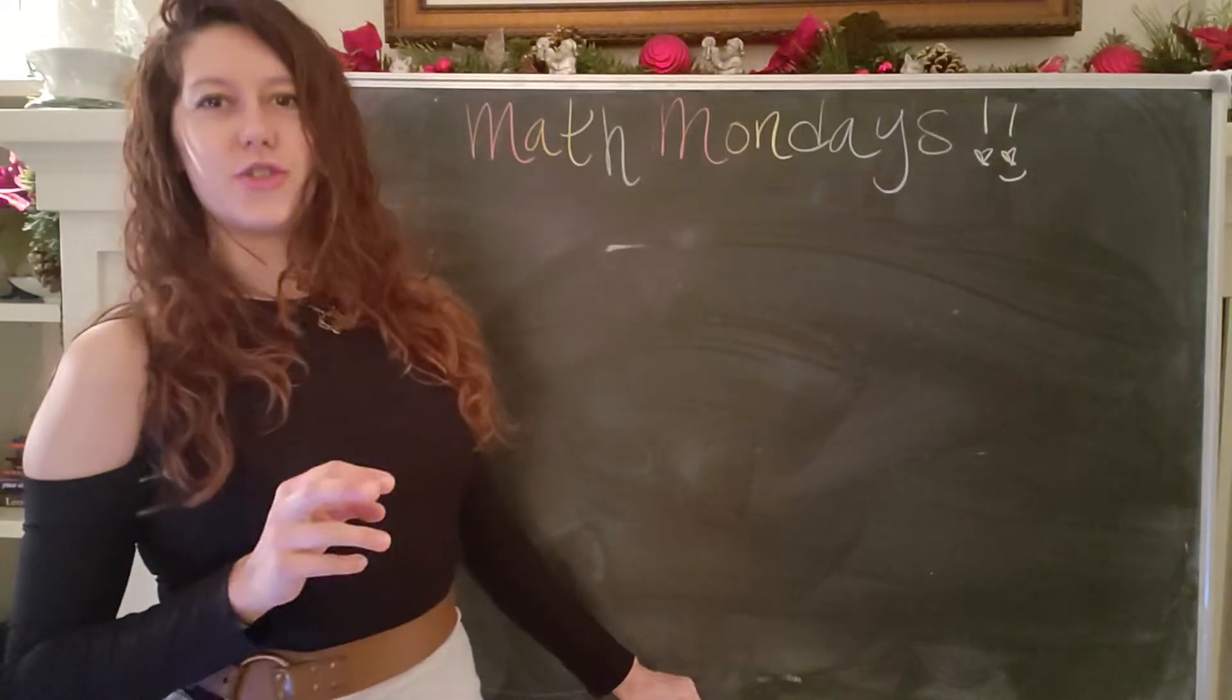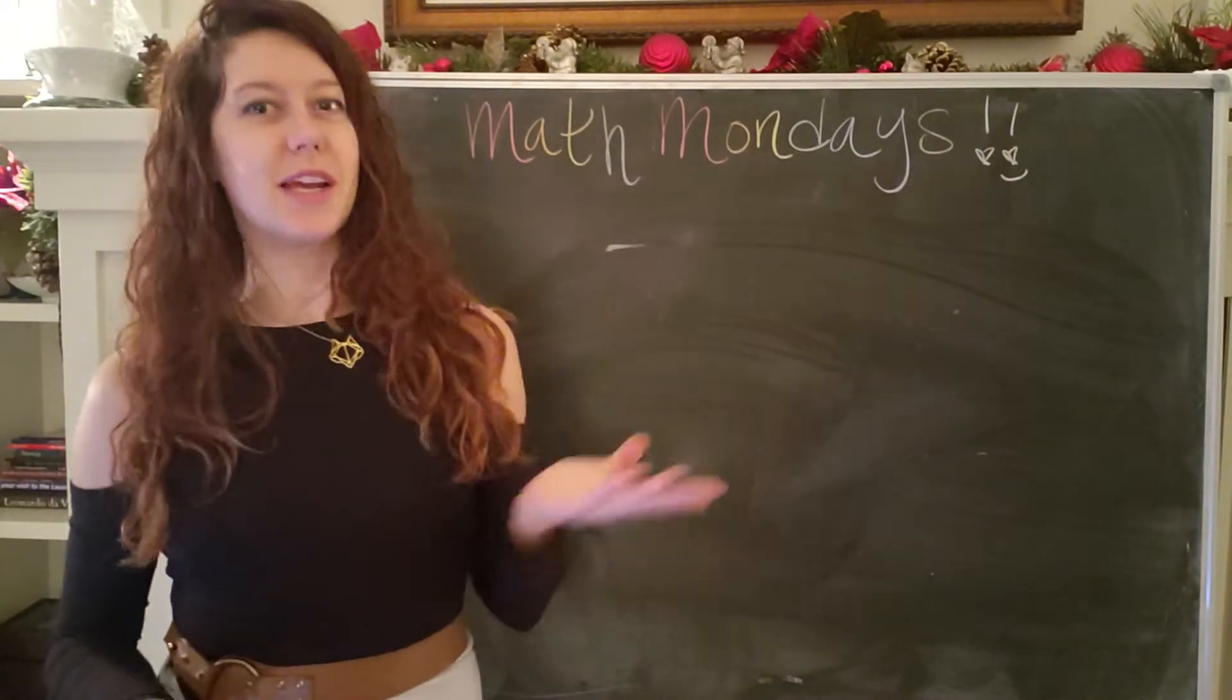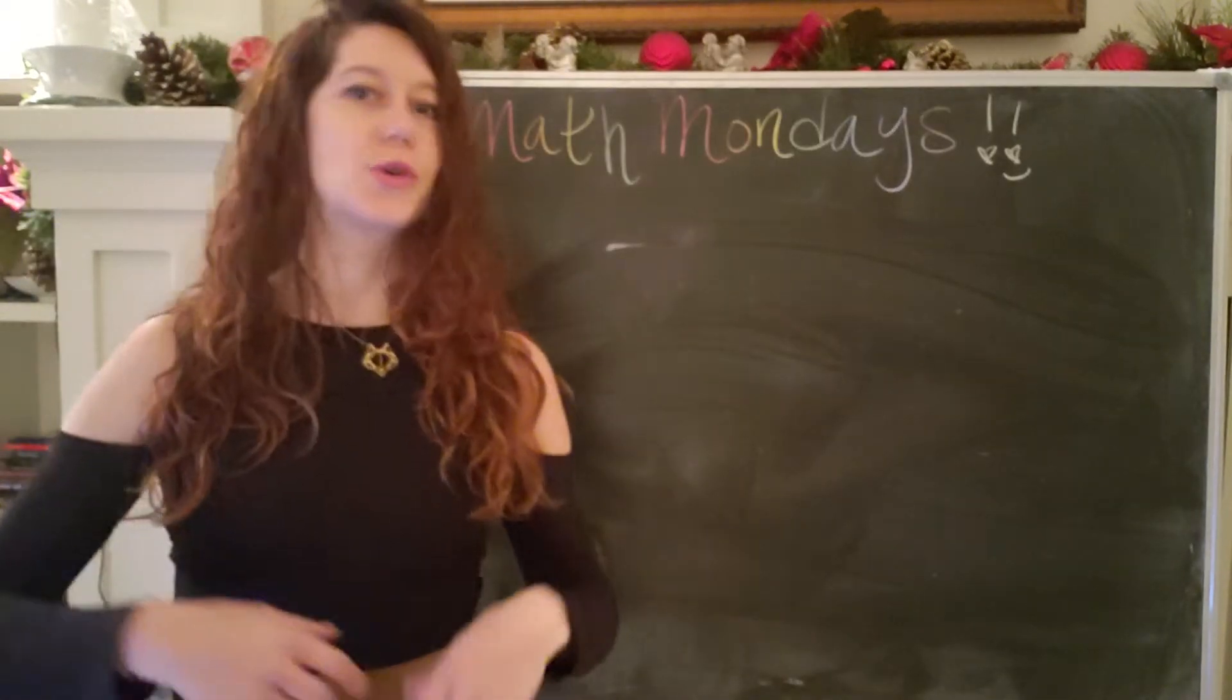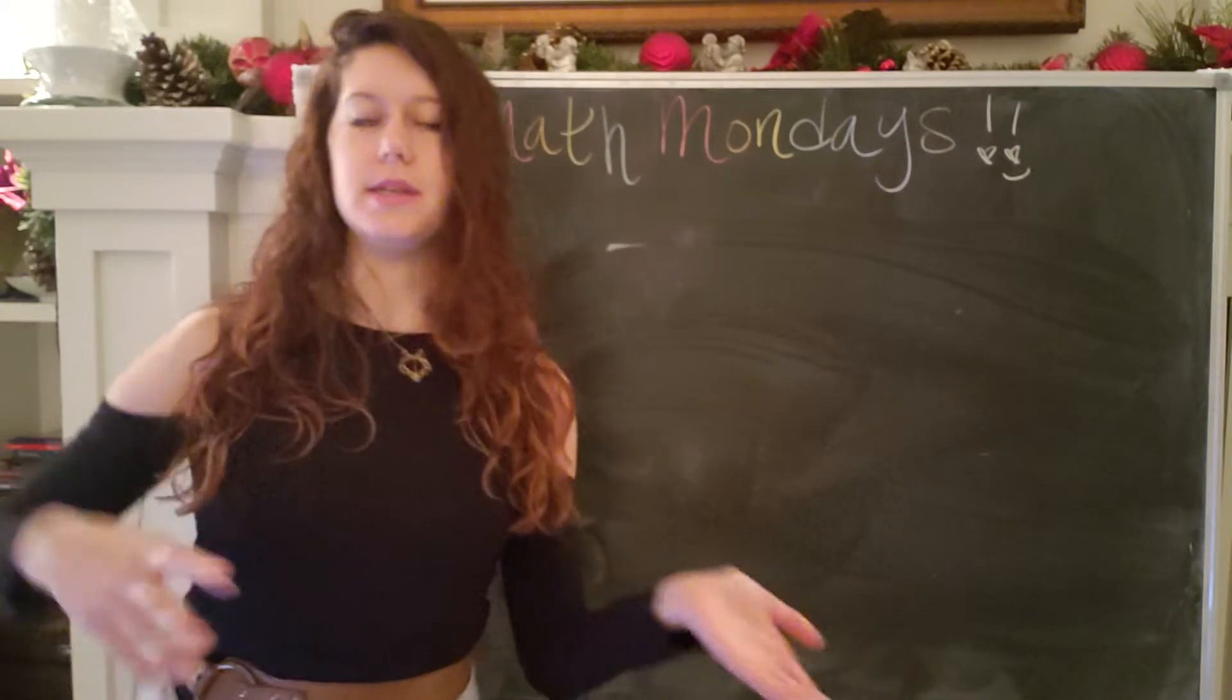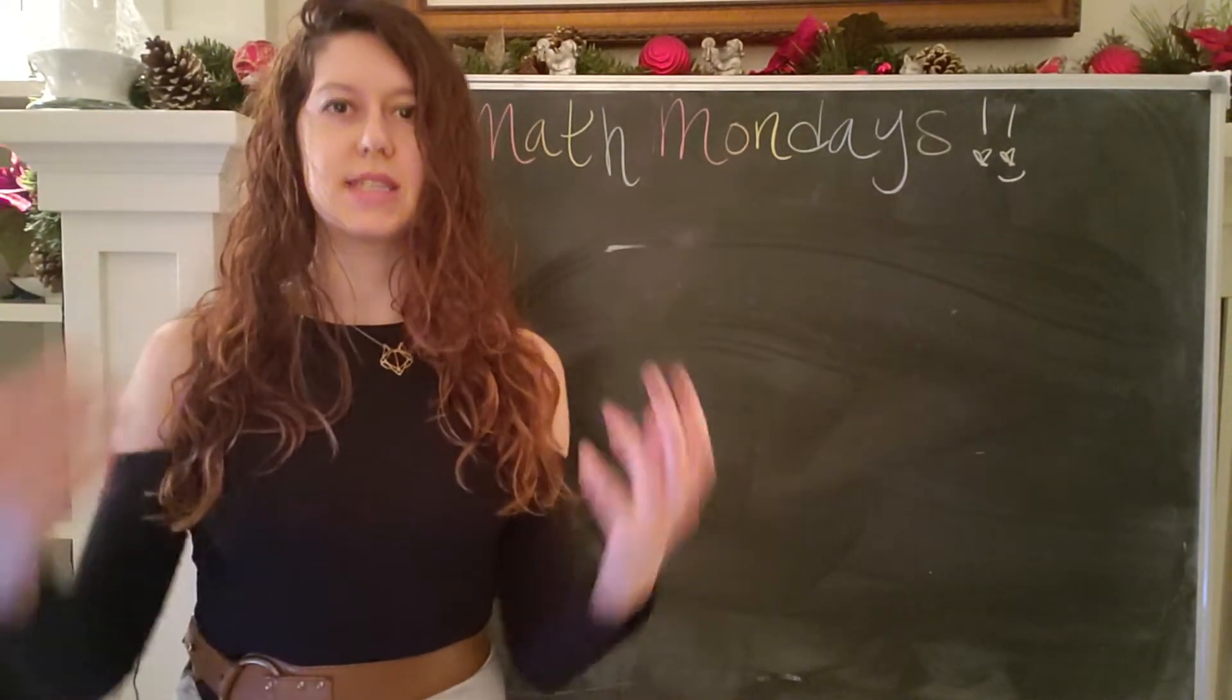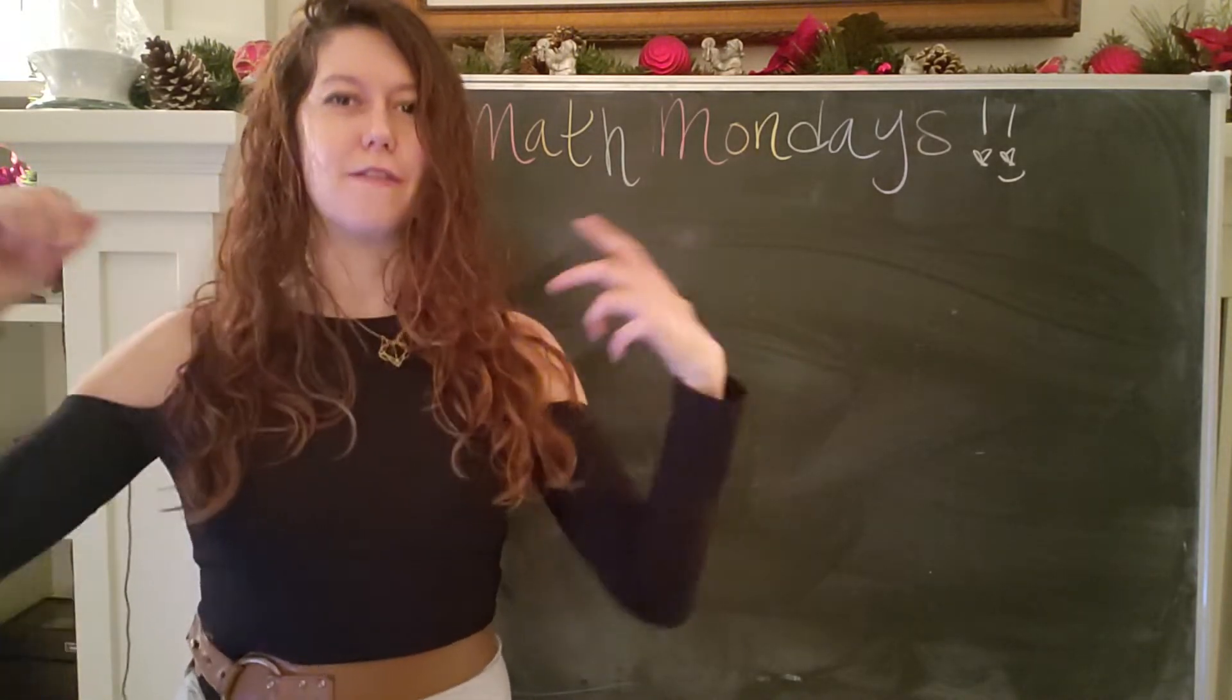So language. There are many different types of languages. I am speaking English right now. English is made up of a series of symbols called letters: A, B, C, D, E, etc. And those symbols, those letters, they represent sounds. When we put those letters together, then we can have words and phrases.